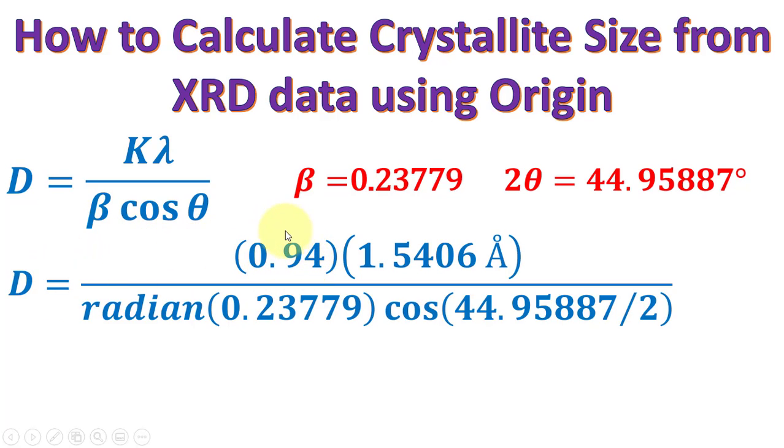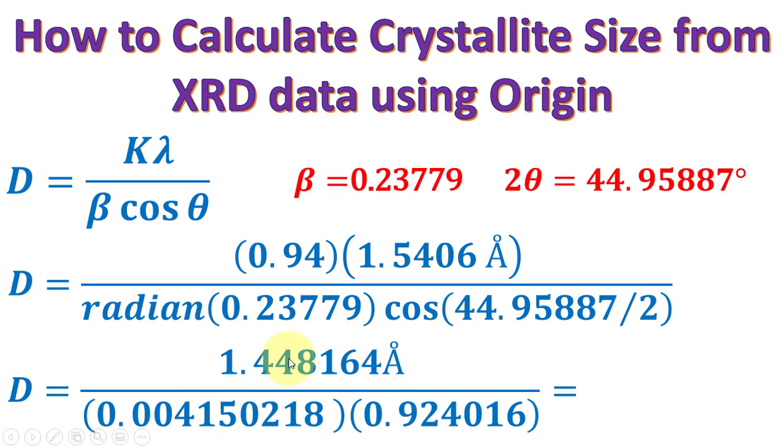D is calculated using K which is 0.94 for spherical cubic crystallites. This is the experimental value of the X-ray wavelength. I will take the radian of this value and then cos. Theta is there, so I will divide two theta by 2. As I calculate these values, the multiplication gives this, the radian gives this, and cos of this equals this. We calculate this in degrees, not radians. This gives us the crystallite size equal to 37.76 nanometers.